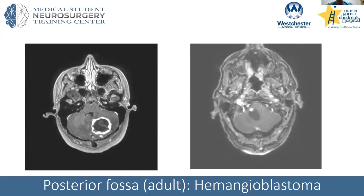The second most common posterior fossa lesion in adults is a hemangioblastoma — a low-grade lesion. The more common form has a very bright nodule, which is the vascular lesion, producing a cystic fluid. Surgery can be curative if the mural nodule is removed — you do not have to go after the cyst walls. A less common solid-appearing hemangioblastoma is more difficult to take out surgically, almost like an AVM, very highly vascular. In this patient we got an angiogram and embolized about a third of the lesion. Typical presentation includes hydrocephalus and incoordination.